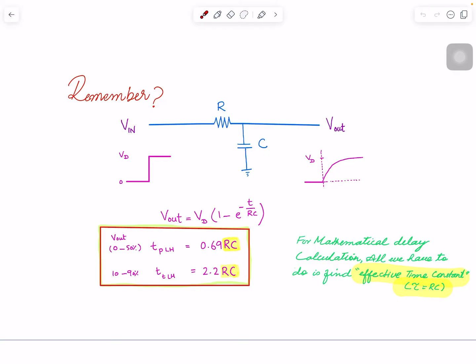If you want to calculate delay based on this simple expression, you get a nice mathematical expression. All you have to find is the multiplication of R and C, which is called the time constant. You multiply with 0.69 to get the rough delay and multiply with 2.2 to get the rough slew.